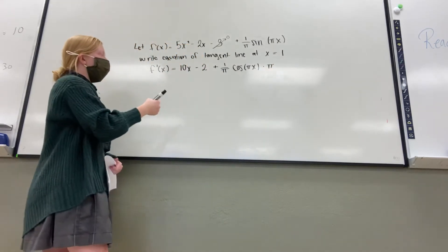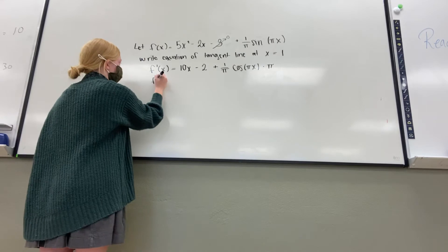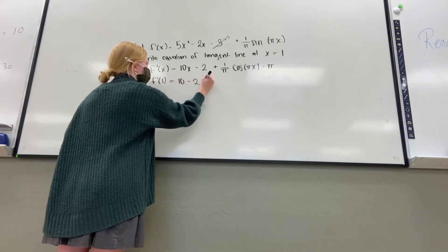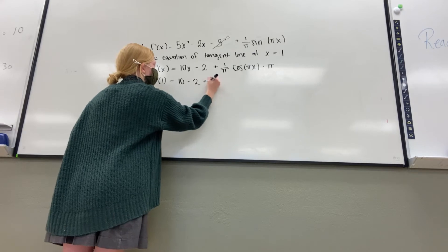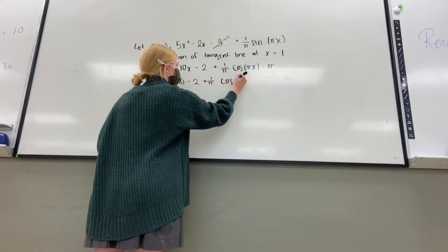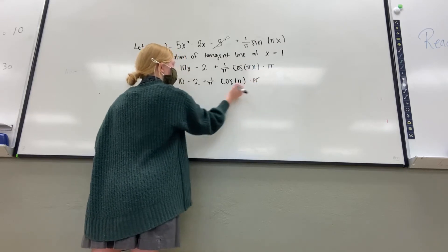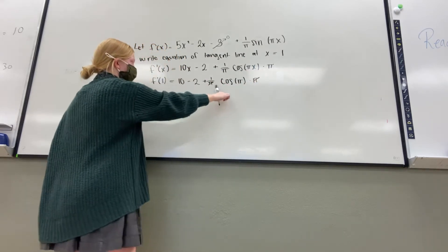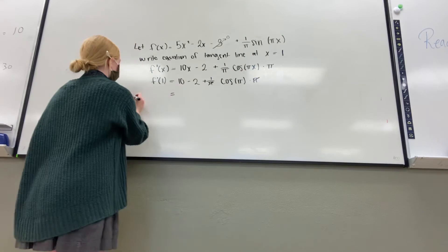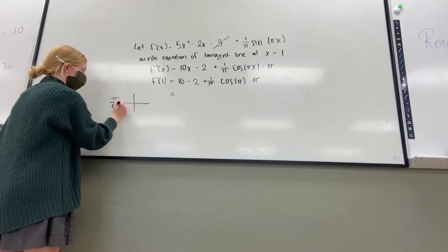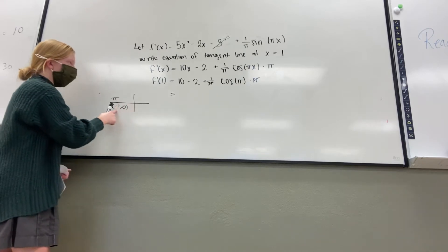Then we want to find when x equals 1, so you plug in 1 for x. So these pi's cancel, and then we just have the cosine pi, which cosine of pi, pi's over here, negative 1 comma 0, so the cosine is negative 1.